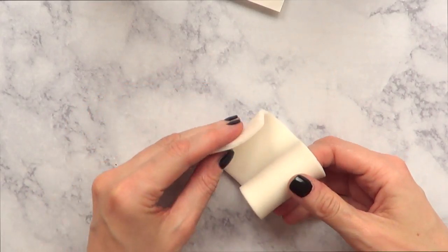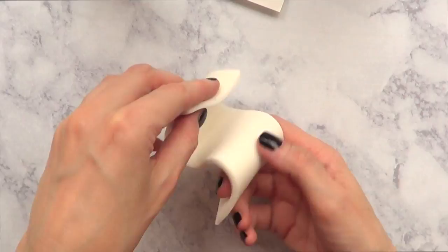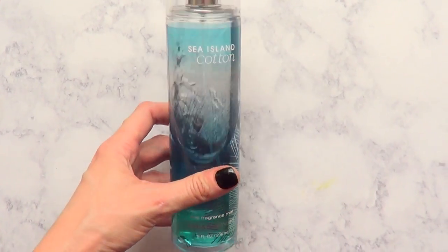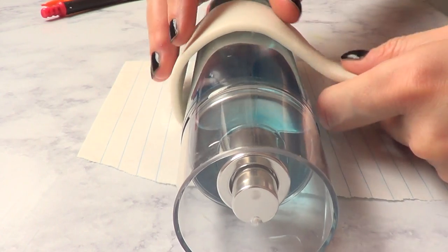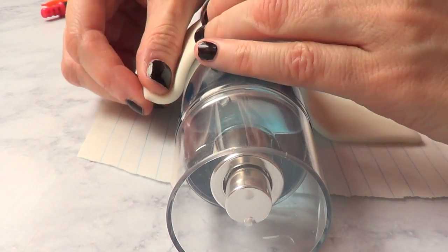Then I'm just going to shape this. Now to shape it, I'm going to be using this bottle of body mist and I'm just going to shape it by putting my clay right there.